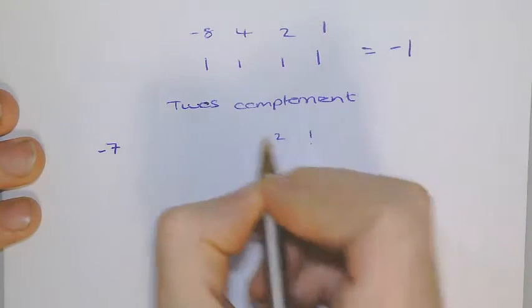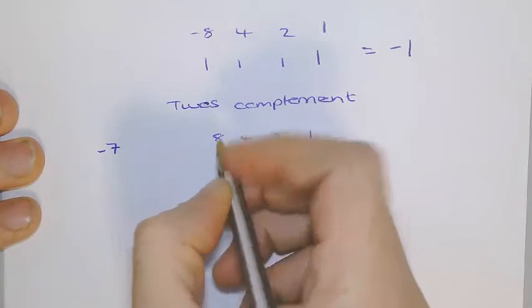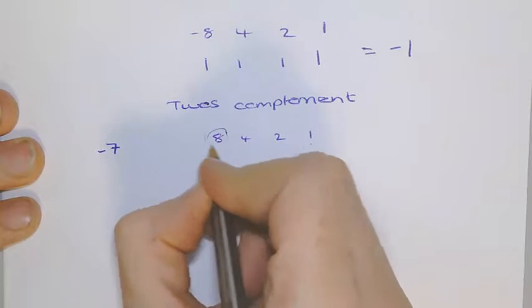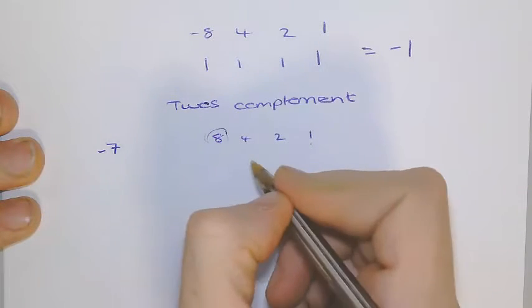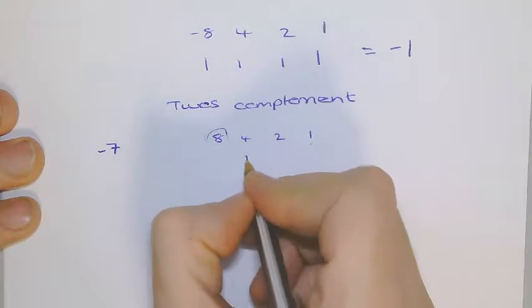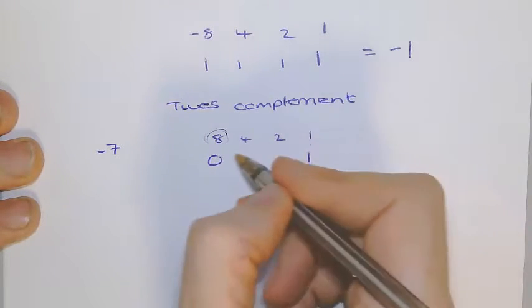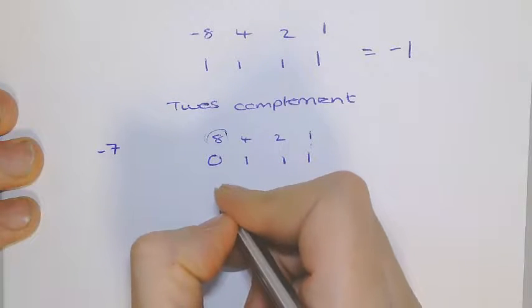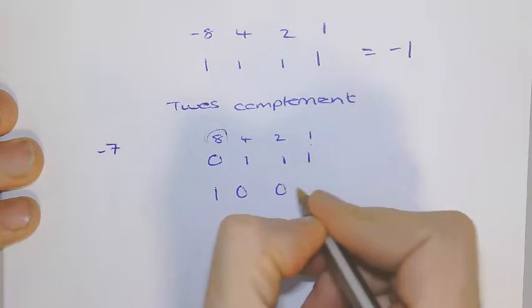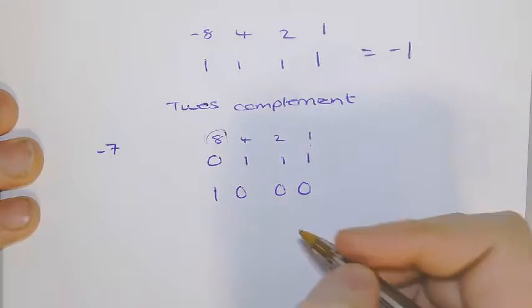So, 1, 2, 4, 8. Obviously, we know that that's going to be minus 8, but in this case, we're working out the positive of it first. Then, what you do, is you flip, or invert that, and add 1.